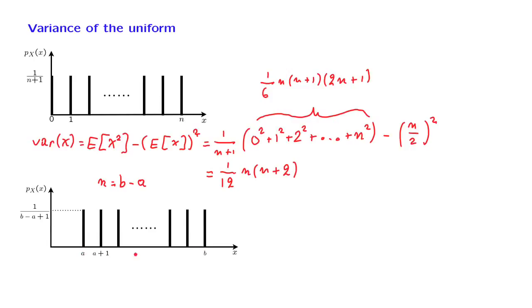But we know that adding a constant does not change the variance. Therefore, the variance of this PMF is going to be the same as the variance of the original PMF, as long as we make the correspondence that n is equal to b minus a. So doing this substitution in the formula that we derived earlier, we obtain 1 over 12 times (b minus a) times (b minus a plus 2).